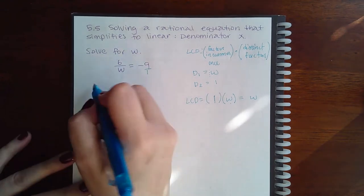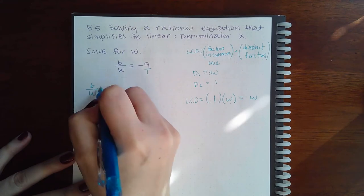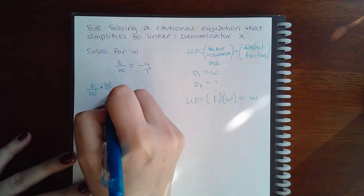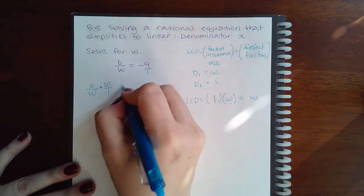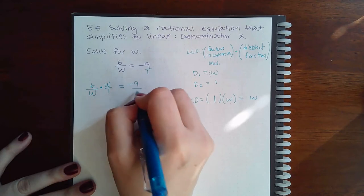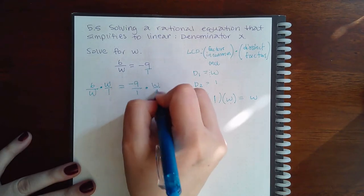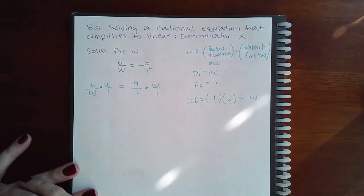And so what I'm going to do is I'm going to take the first fraction and multiply it by w over 1. Then I'm going to take the second fraction and multiply it by w over 1, the LCD over 1.